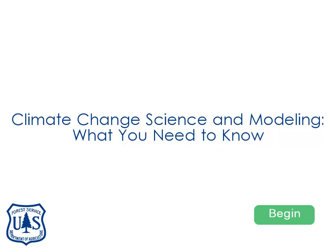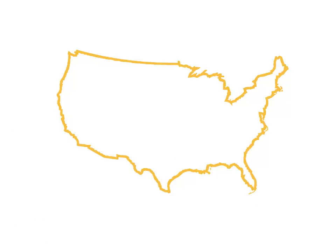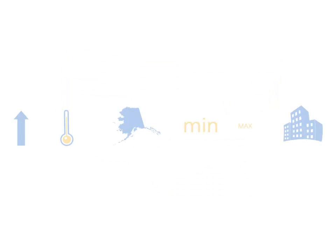Climate change science and modeling: what you need to know. In recent decades, many changes in the climate and in forest ecosystems have been observed in the United States. Temperature is increasing — in the last 50 years, temperature has risen.